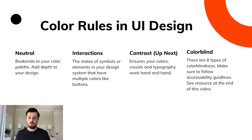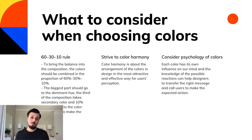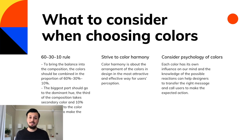Now let's look at three things to consider when choosing colors. First is the 60-30-10 rule — to bring balance, colors should be combined in proportions of 60, 30, and 10 percent. The largest part goes to the dominant hue, the next third to the secondary color, and 10% to accent colors. Second, strive for color harmony — the arrangement of colors in the most attractive and effective way for users. Lastly, consider the psychology of colors, because each color influences our mind and can transfer the right message and call users to the expected action.